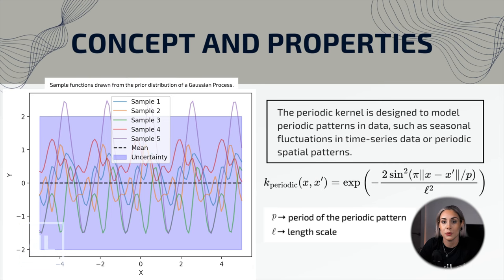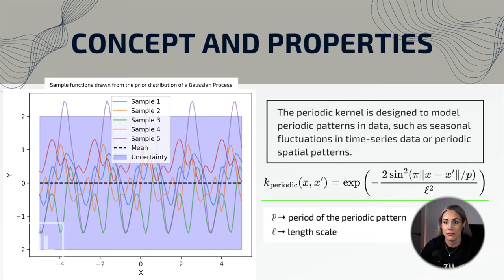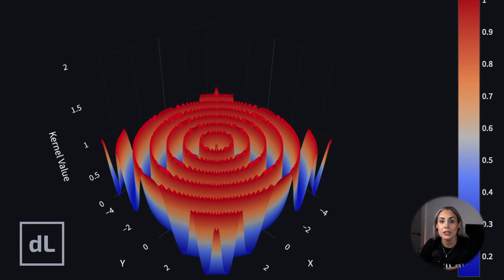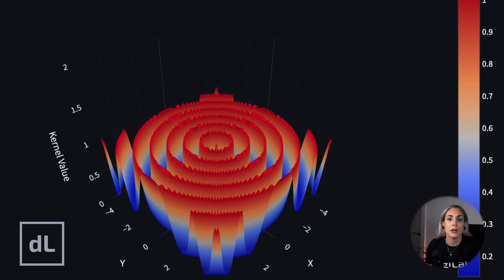The periodic kernel is designed to model periodic patterns in data, such as seasonal fluctuations in time series or periodic spatial patterns. Mathematically, P represents the period — the distance between repetitions of the function — and L is the length scale. The periodic kernel works well when data repeats itself, like the seasons or the phases of the moon. For example, studying temperature data over a year, the periodic kernel captures how summer temperatures are similar to other summers and winter temperatures to other winters.